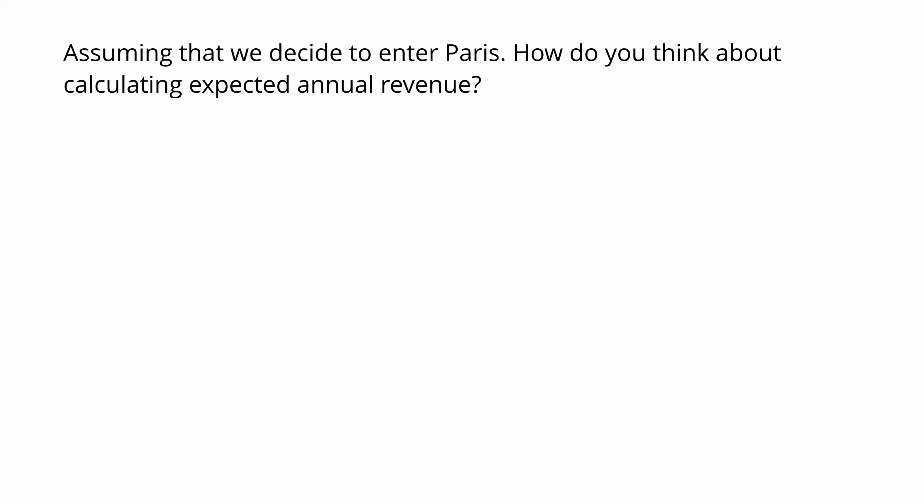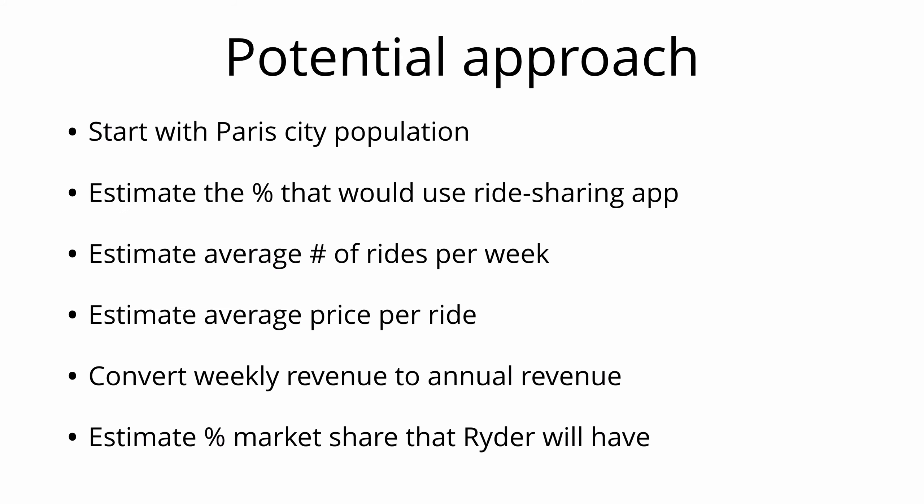Assuming that we decide to enter Paris, how do you think about calculating expected annual revenue? Pause the video now to answer this question. Here is one potential approach using the top-down market sizing method. We would start with the Paris city population and then estimate the percentage that would use a ride-sharing app. We then estimate the average number of rides taken per person per week, then the average price per ride, and convert this weekly figure to annual revenue. Finally, we'd estimate the market share that Rider would have to estimate expected annual revenue.